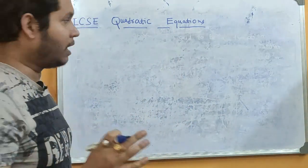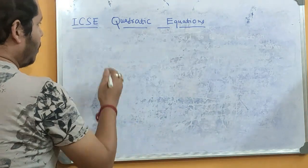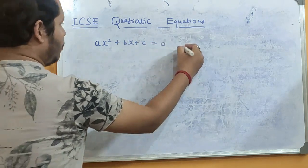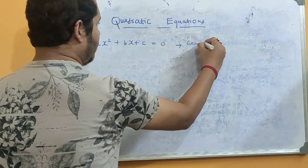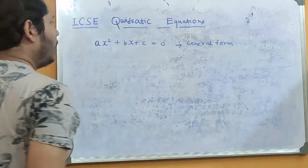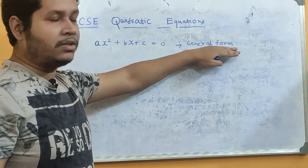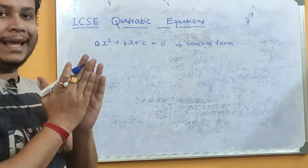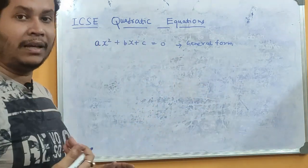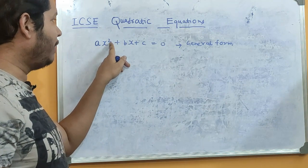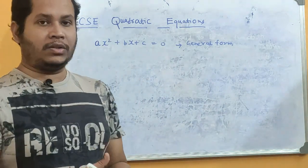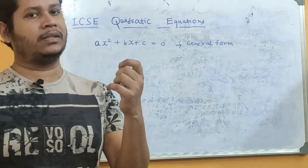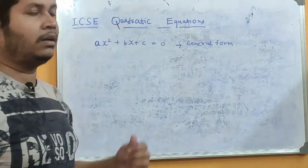We'll begin with the basics. I'll write an equation here — this is called the general form of the quadratic equation. Now, why is it called a quadratic equation? A polynomial or expression which is part of an equality such that the highest power of the variable is 2 is called a quadratic equation. In the same way, when the highest power is 1, it's a linear equation.